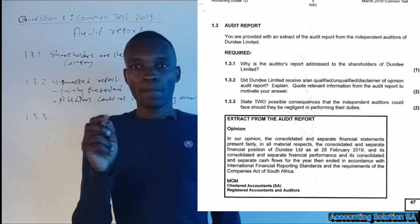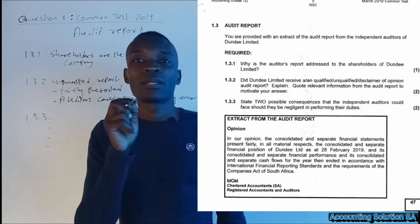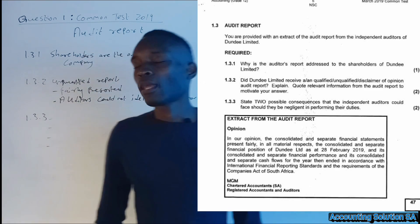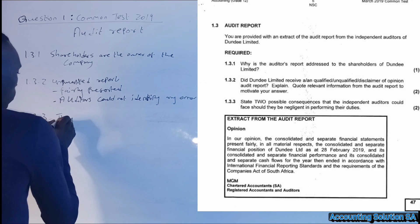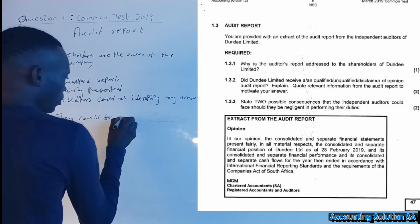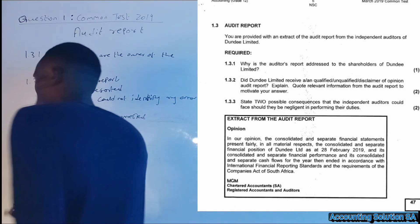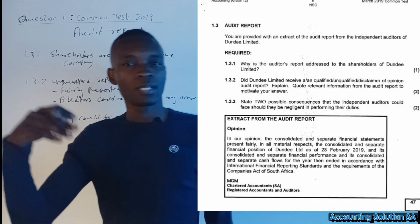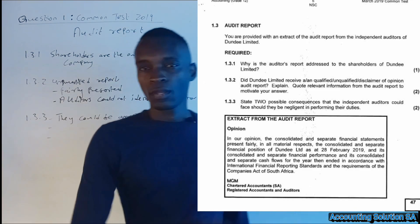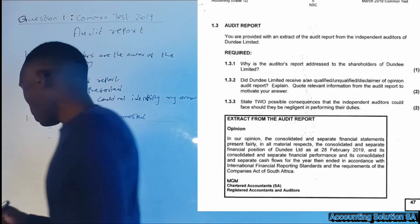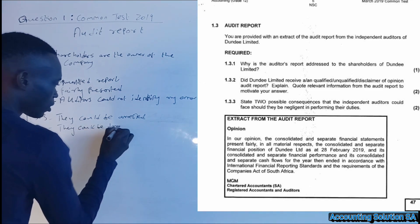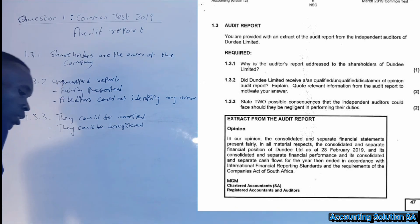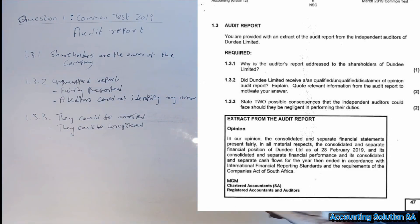If they find out that an auditor was negligent in their duty, here is what could happen. Number one: auditors can be arrested if they express the wrong report or the wrong opinion. Number two: remember, auditors are registered — some are registered with SAICA and some with other boards. Those boards can take away their registration, meaning auditors could be de-registered.